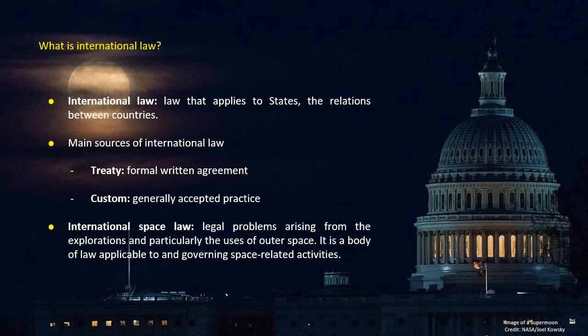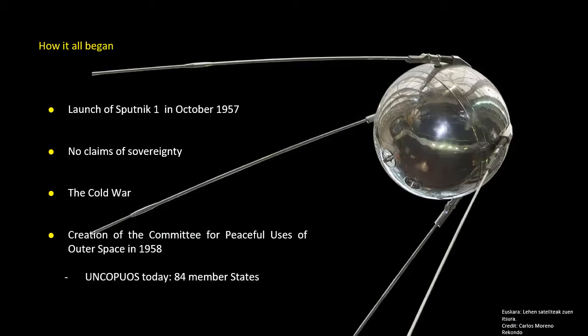So how did space law begin? It all began back in 1957 when the USSR launched Sputnik — the very first time a space object of one state orbited over the territory of other states.